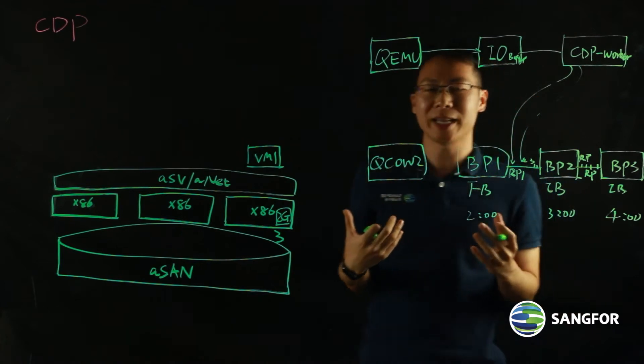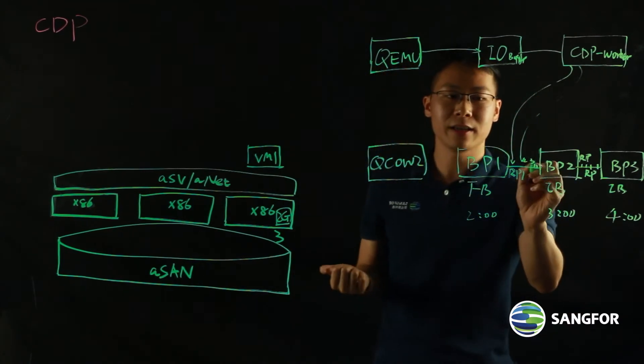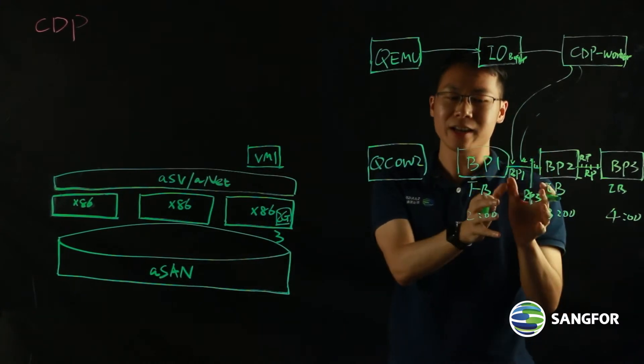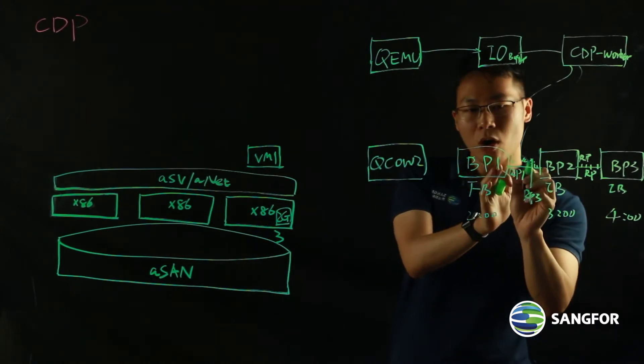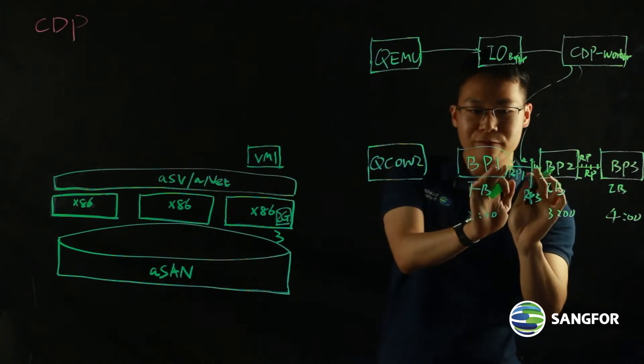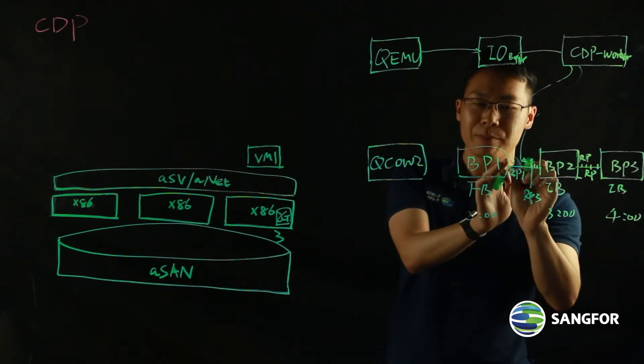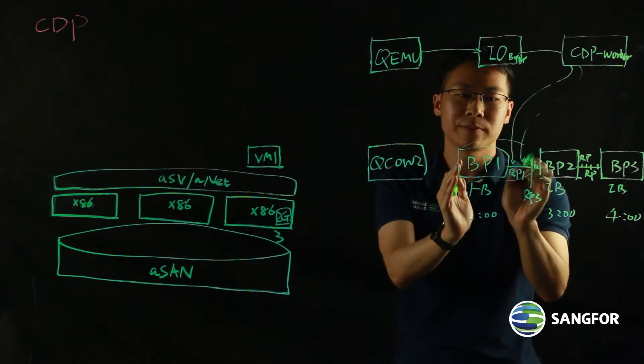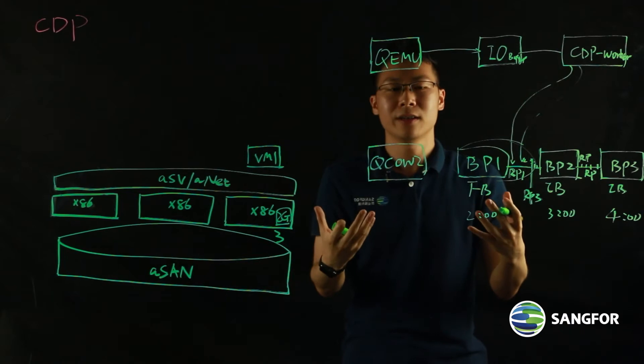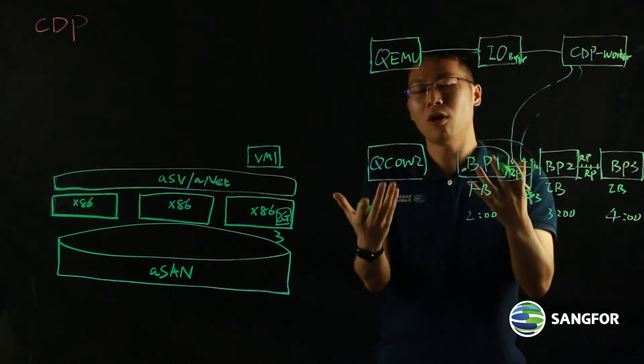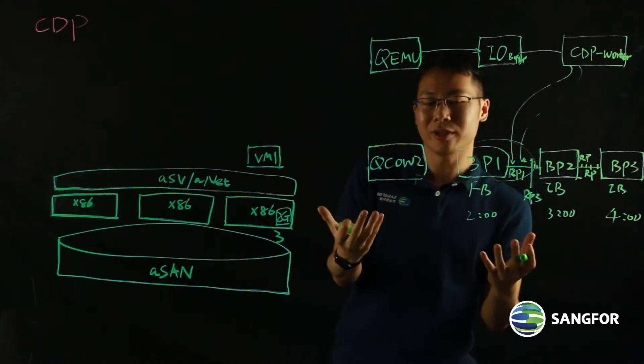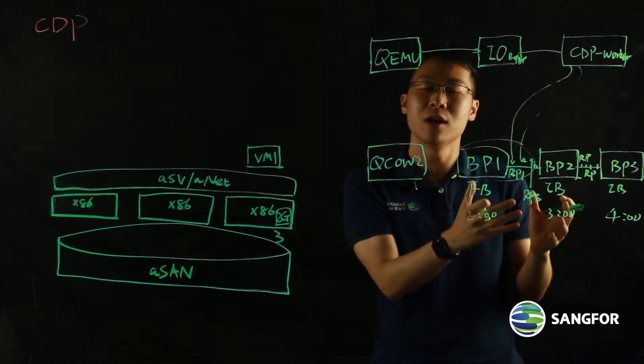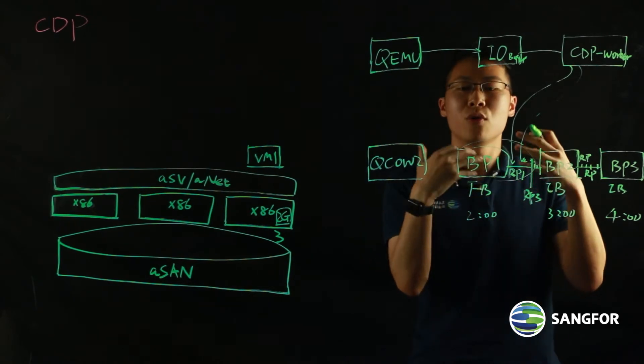If I need to recover my data, what I need to do is basically, let's say, here, the RP3. I want to recover the data from that point of time. Then, all the recovery points in front of RP3, RP1 and RP2, together with BP1, they will be merged. And then present a usable file to your management console. And then you can recover the file or recover the virtual machine based on your requirements.